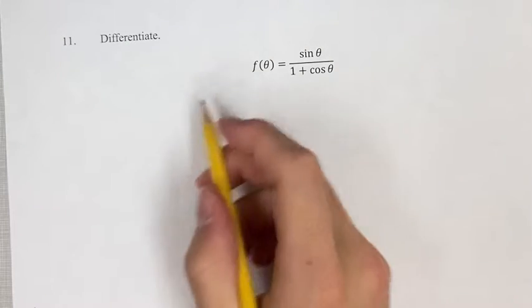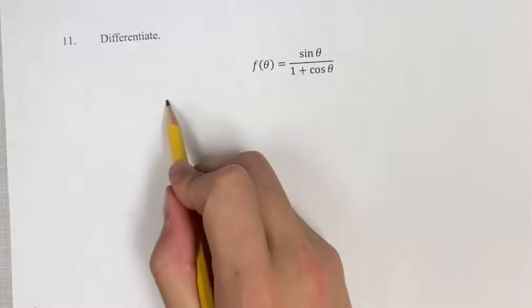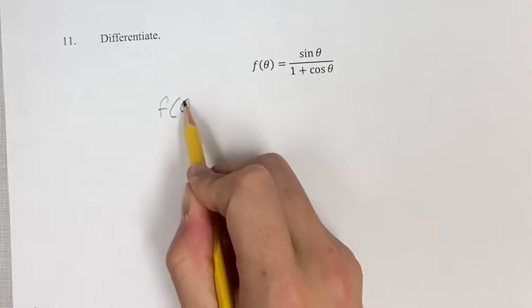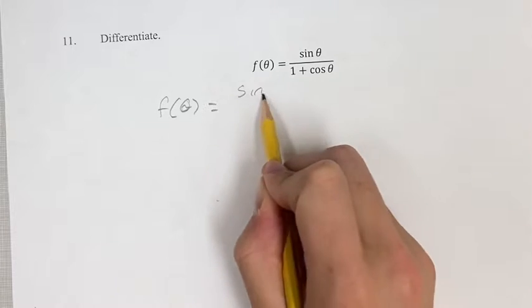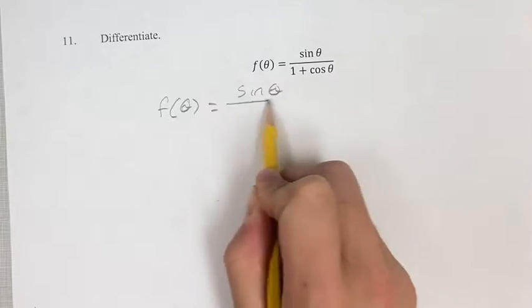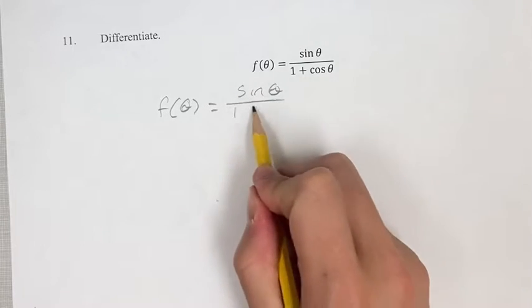In this problem, we're differentiating the function f of theta is equal to sine theta over 1 plus cosine theta.